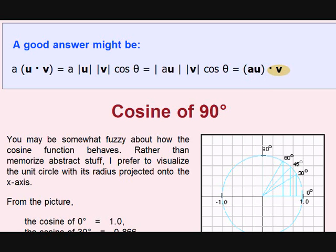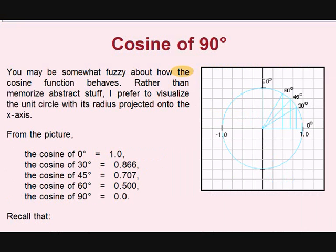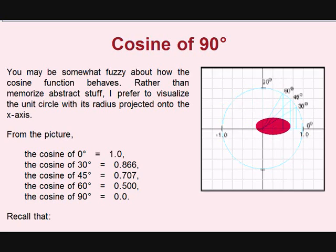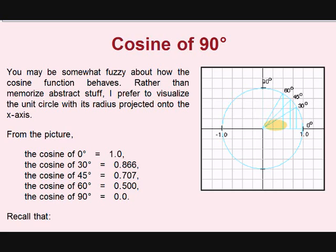Cosine of 90 degrees. You may be somewhat fuzzy about how the cosine function behaves. Rather than memorizing abstract stuff, let us visualize the unit circle with its radius projected on the x-axis. Cosine of 0 degree is 1. The angle is 0. Cosine of 30 degree is 0.866.